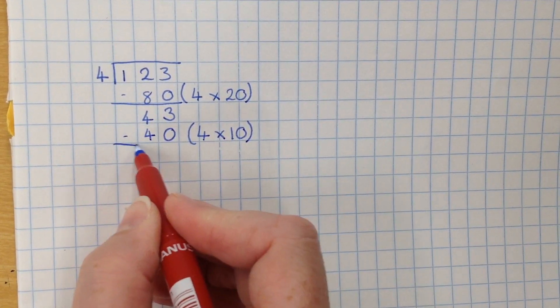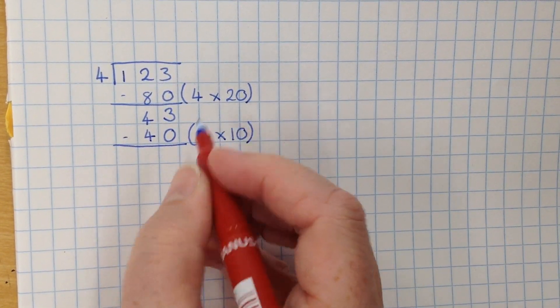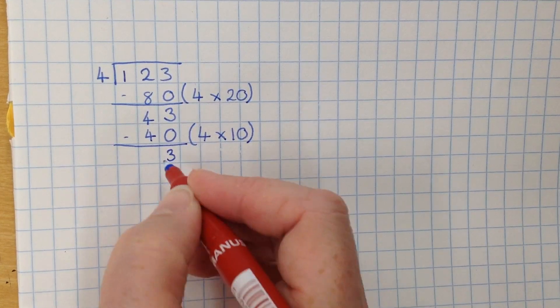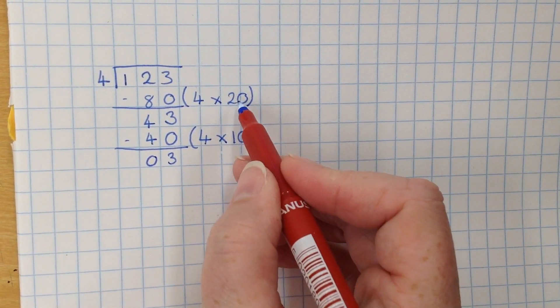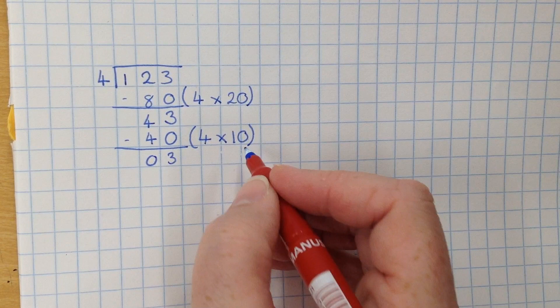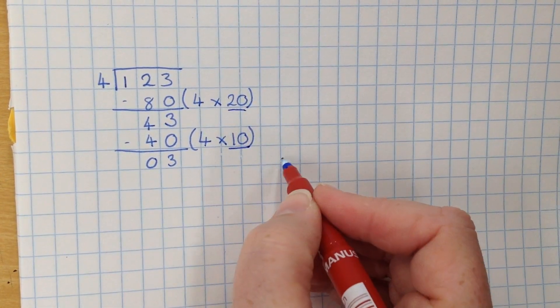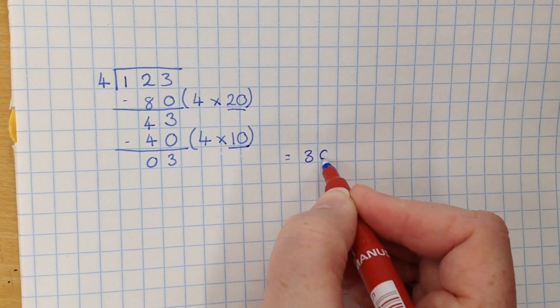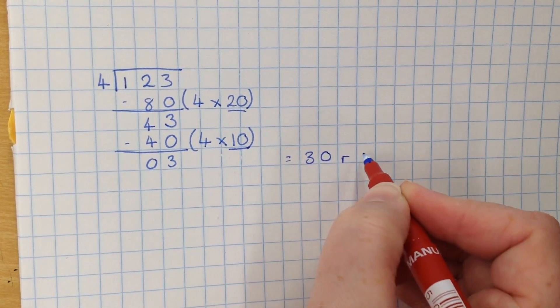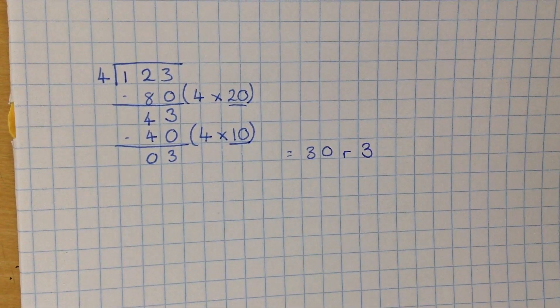Again, we're subtracting that, which is going to give us our remainder of 3. So you add the 20 and the 10 together, which gives you 30, remainder 3. Okay. Thank you.